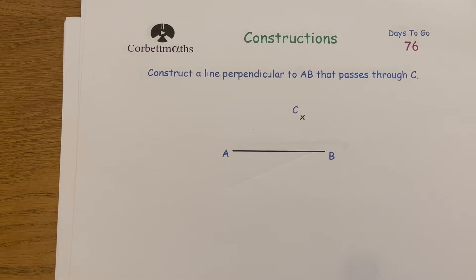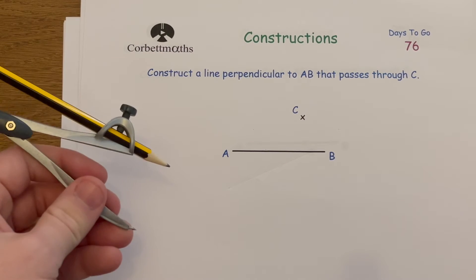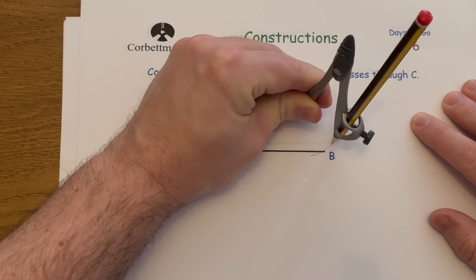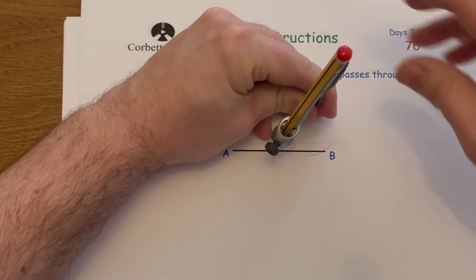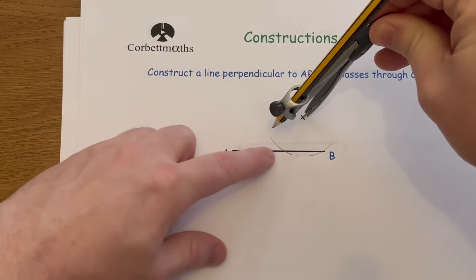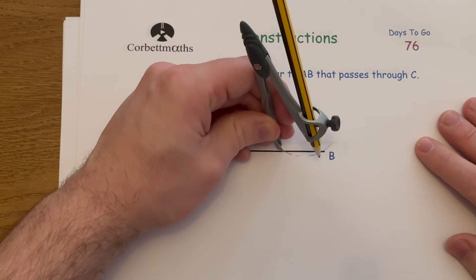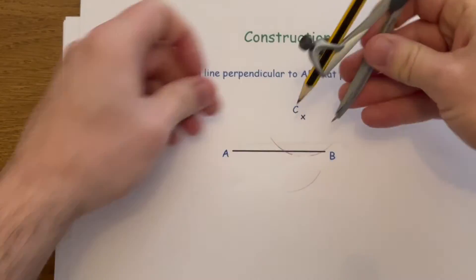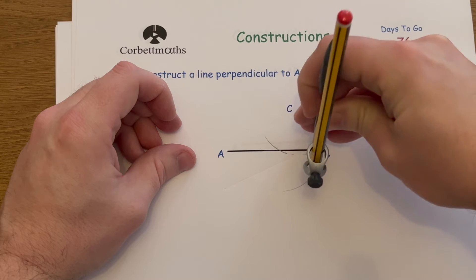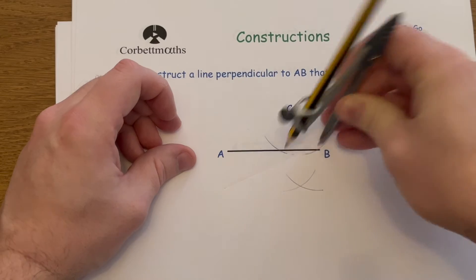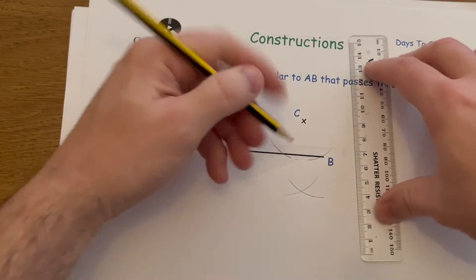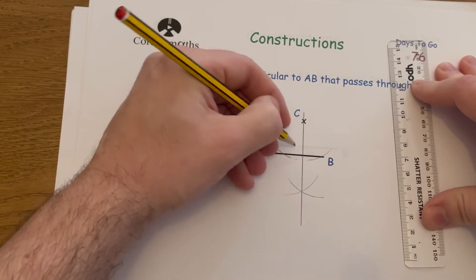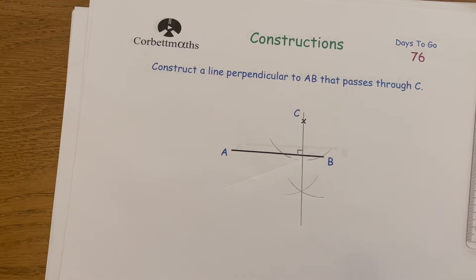The next construction is constructing a perpendicular to a line that passes through a particular point. Put the point of the compass on C and set it so you can draw an arc on each side of the line, crossing AB in two places. Keeping the compass the same size, put it on each intersection point and arc below the line. Then draw a line through point C and where those two lower arcs intersect — that line is perpendicular to AB and passes through C.